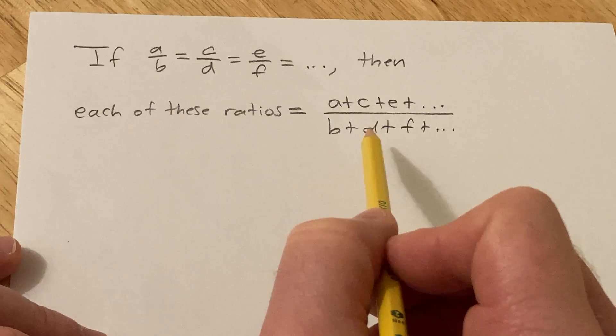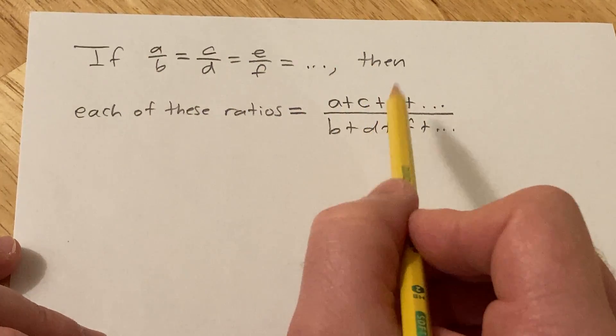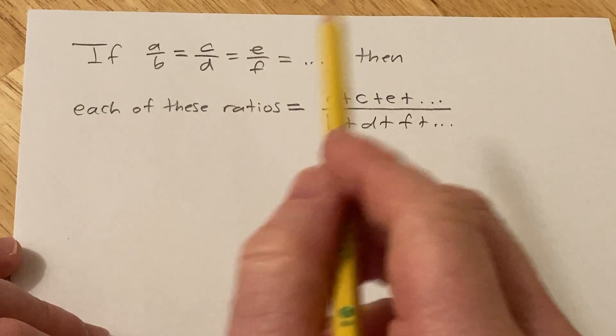So that's pretty cool. Again, when you have equal fractions, each fraction is equal to the sum of all the numerators divided by the sum of all the denominators.